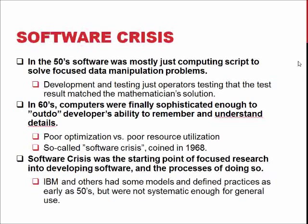Of course, since we had already been doing software for 20 years when the software crisis was declared, companies like IBM had defined practices for developing software. But they were nowhere near systematic enough for general purpose use, or they were company secrets held by a really small group of highly specialized technicians — something like expert masons during the dark ages who maintained secret societies to drive out competition. But of course we didn't end up with a secret society — we ended up with software engineering research.